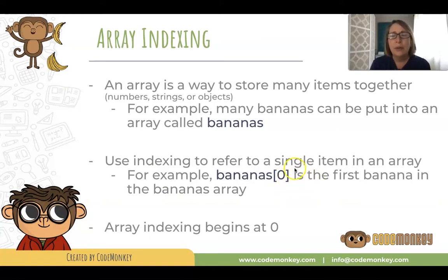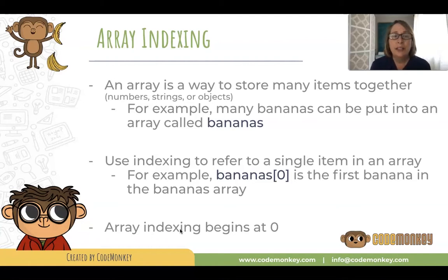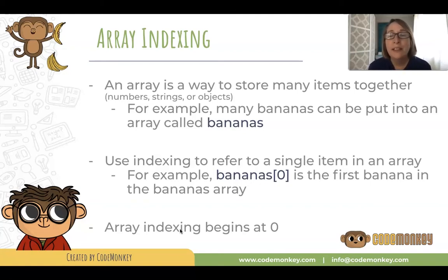Now you might wonder, why is the first banana bananas with index zero? Well, array indexing begins at zero. In fact, most counting in coding begins at zero. So if you have three items, those items would have the index of zero, one, and two.